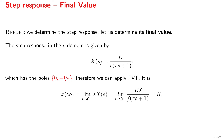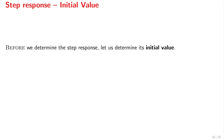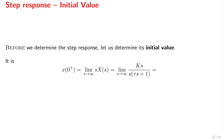Applying the final value theorem: x at infinity equals the limit as s goes to 0-plus of s times X(s). Substituting K over s(tau s + 1), the s in the numerator and denominator cancel, and setting s equal to 0 gives the final value equal to K. So the final value of the step response of a first-order system is K. For the initial value, applying the initial value theorem gives x at 0-plus equal to the limit as s goes to infinity of s times X(s), which equals the limit of Ks over s(tau s + 1), and this is equal to 0.